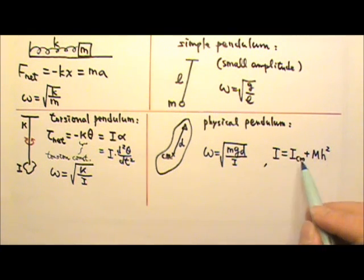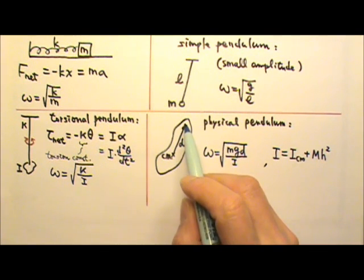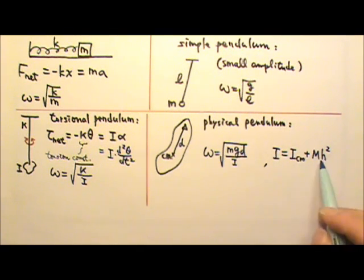Where the H and the D both are the distance between the axis and the center of mass. So this D and this H, they are the same thing.